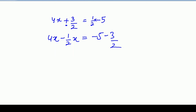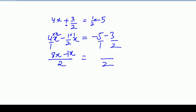Ab hume kya karna hai — ye fraction wala number hai, ye without fraction hai to iske niche by 1 lagao. Ab inka LCM nikalna hai: 1 aur 2 ka LCM 2 hoga. 2 ko 1 se divide kiya, answer 2 aaya — upar wale ke saath multiply karo: 8x. 2 ko 2 se divide kiya 1 aaya, to 1x. Is taraf bhi LCM 2 aaya: 2 ko 1 se divide kiya 2 aaya, multiply karke minus 10. 2 ko 2 se divide kiya 1 aaya, multiply kiya 1 se: minus 3.